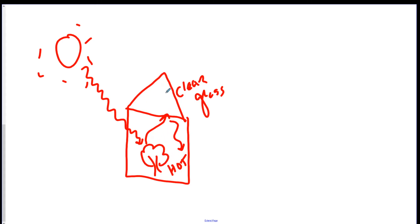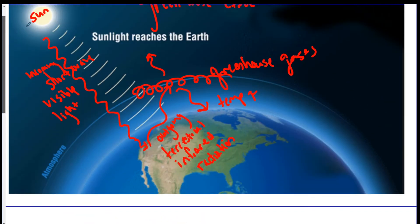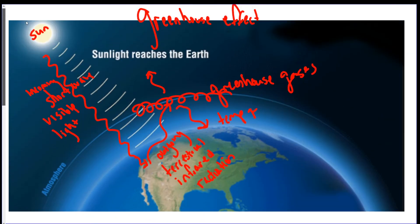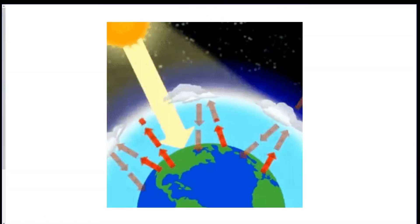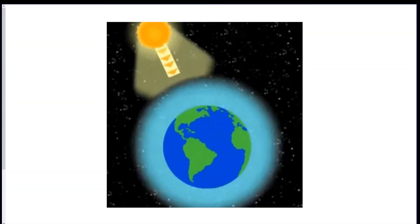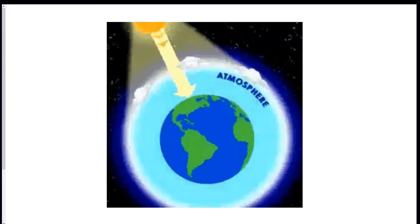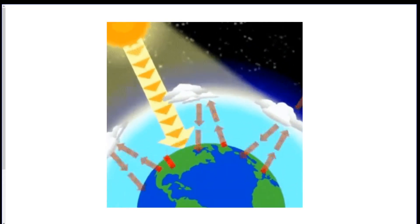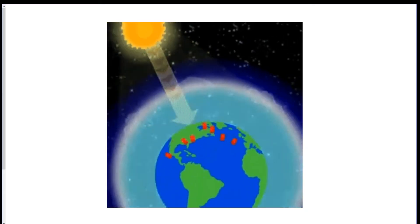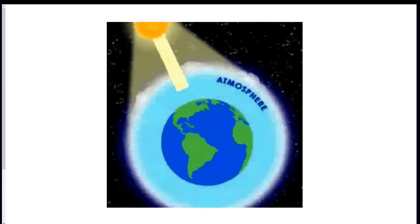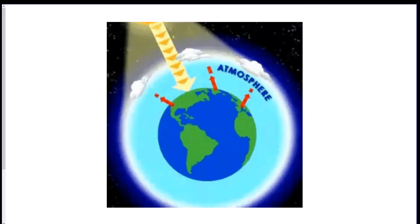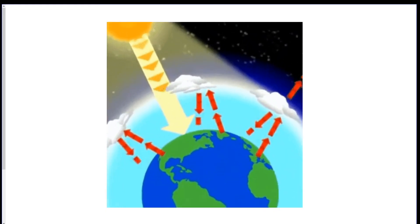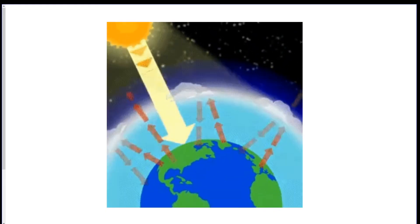We use greenhouses to grow plants that need warmer heat. The analogy is the same exact thing as the greenhouse effect — that's why it's called the greenhouse effect. Here's an image I liked: incoming solar radiation is transformed into outgoing terrestrial heat, which is then trapped in our atmosphere because of the greenhouse gases. If there were no greenhouse gases in the atmosphere, there would be no way to trap the heat.